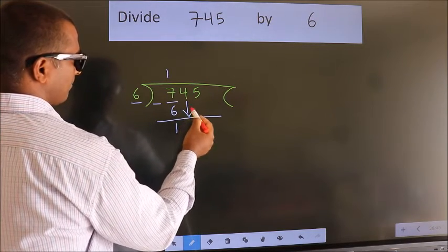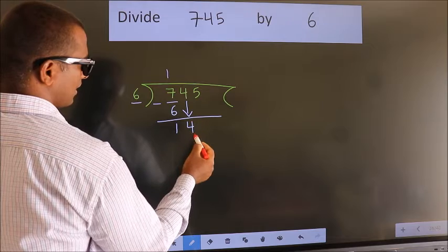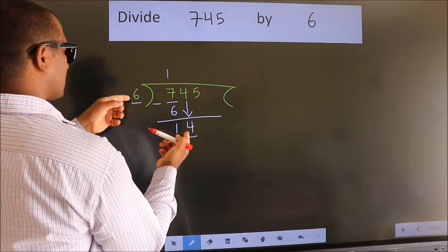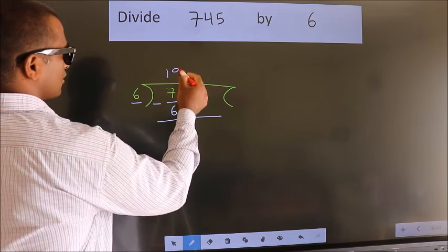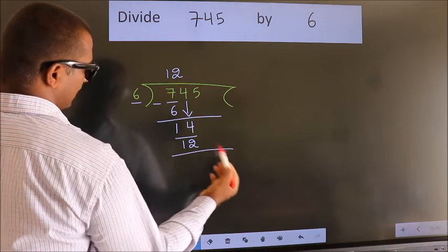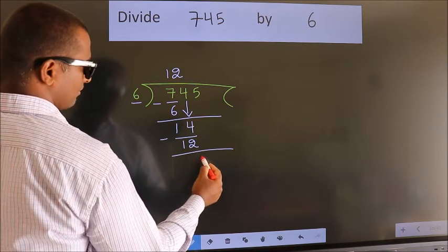After this, bring down the beside number. So, 4 down. So, 14. A number close to 14 in the 6 table is 6 twos, 12. Now, we subtract, we get 2.